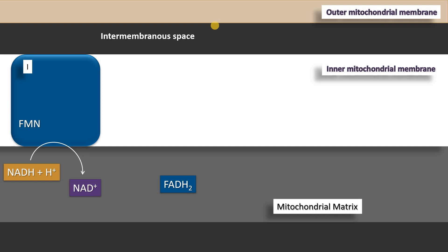Complex I is a large protein. It has FMN — flavin mononucleotide — present in oxidized form. This FMN acquires two protons and two electrons from NADH plus H+, and in turn is converted to reduced FMNH2. This FMNH2 carries electrons as well as protons from the reducing equivalent NADH plus H+. Now this FMNH2 undergoes oxidation back to FMN, and meanwhile donates its two electrons to iron-sulfur complexes which are present in complex I.